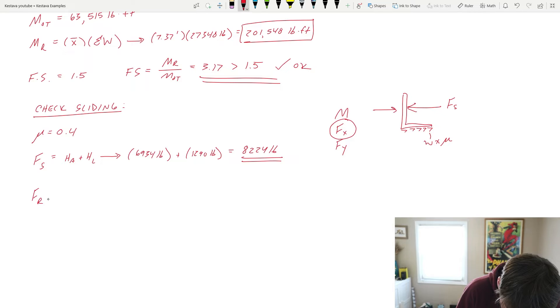Well, what is our resisting force? F sub R can be equal to F sub F, which I'll call force of friction. And that is equal to 0.4 times your summation of your weight. This is your friction factor. That spits out 10,939 pounds.